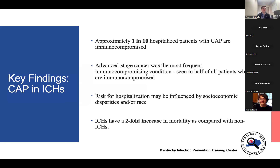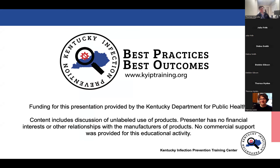To summarize the key findings: one in 10 hospitalized patients with CAP are immunocompromised; advanced stage cancer was the most frequent immunocompromising condition, seen in over half of immunocompromised patients; risk for hospitalization may be influenced by socioeconomic and racial disparities; and immunocompromised hosts have a twofold increase in mortality compared to non-immunocompromised hosts at each time point. Thank you for listening — if you have any questions, please let me know.